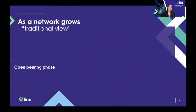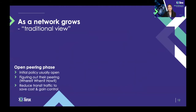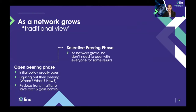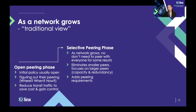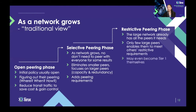Traditionally, as networks grew, they were considered to go through different peering phases. A very small network that just started peering would generally have an open peering policy, as their intention was to reduce the amount of traffic they sent through a transit provider that they were paying for. If they could exchange that traffic directly with the network they're trying to reach, that would be a good cost saving. As they grew, they might move into a more selective peering phase. And if they grew to a large international network, they might even become a Tier 1 provider and not peer with anyone at all, as they were in the business of selling access to the internet.